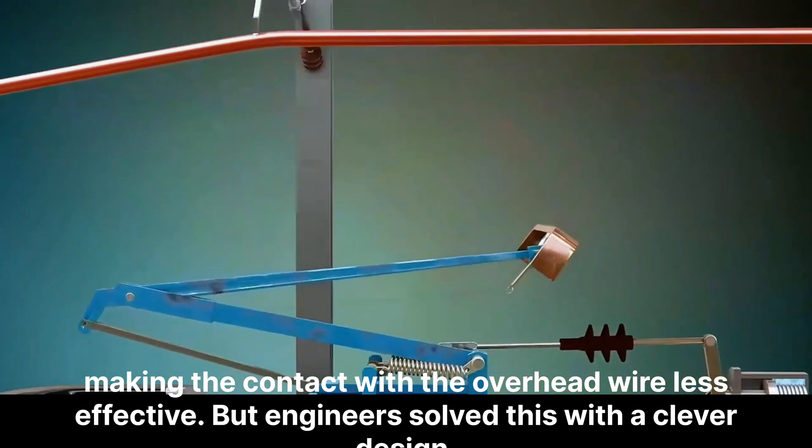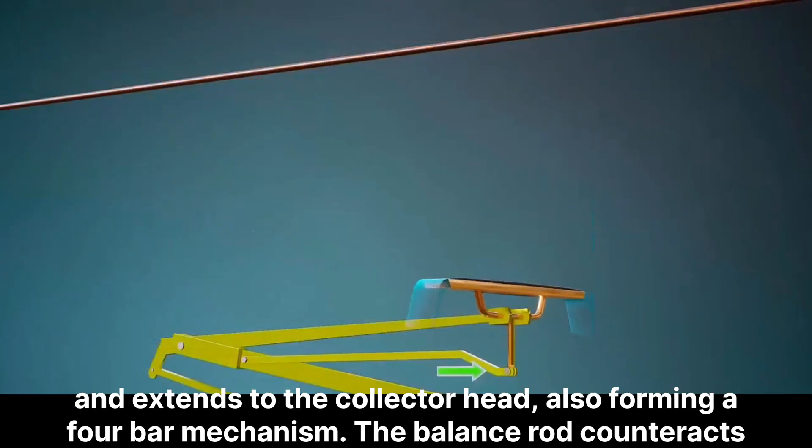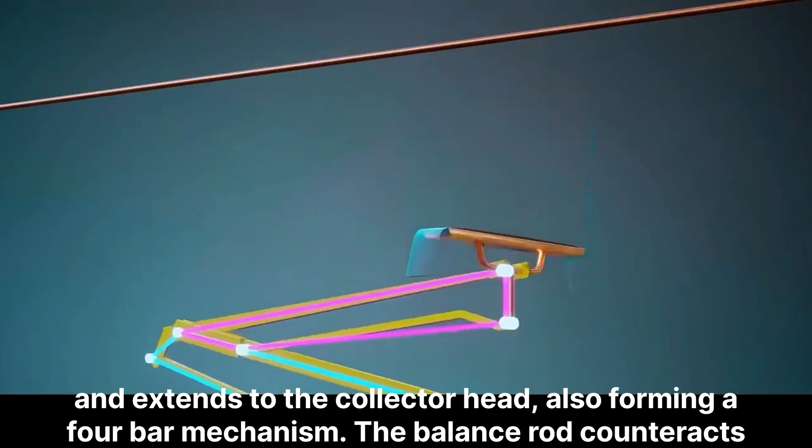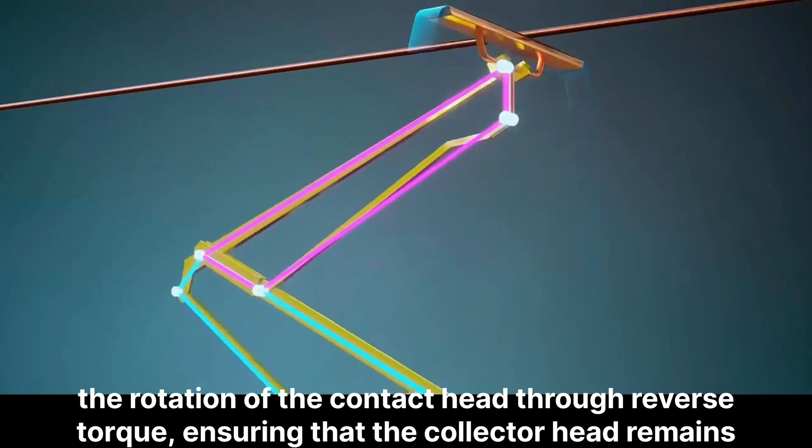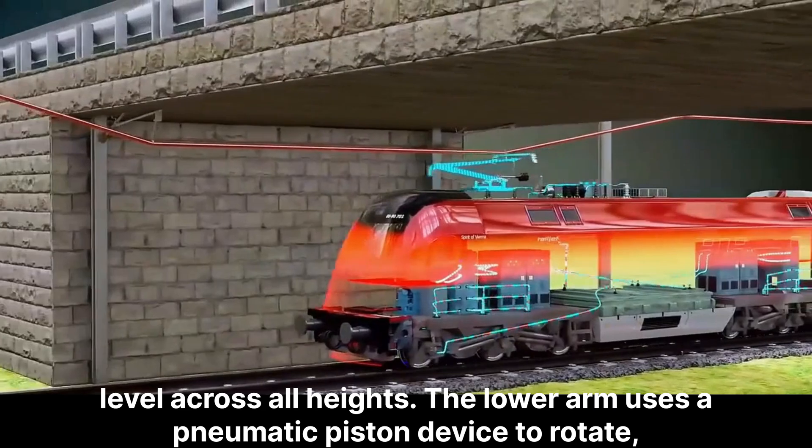But engineers solved this with a clever design. This was achieved by introducing a balance rod, which connects to the lower arm and extends to the collector head, also forming a four bar mechanism. The balance rod counteracts the rotation of the contact head through reverse torque, ensuring that the collector head remains level across all heights.